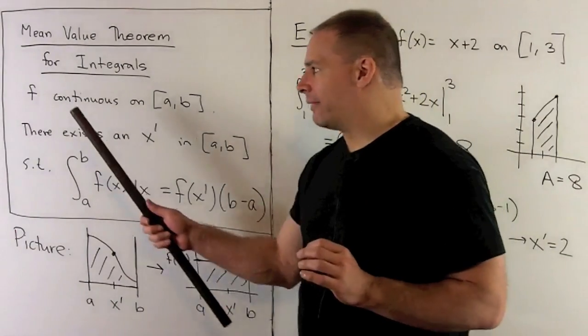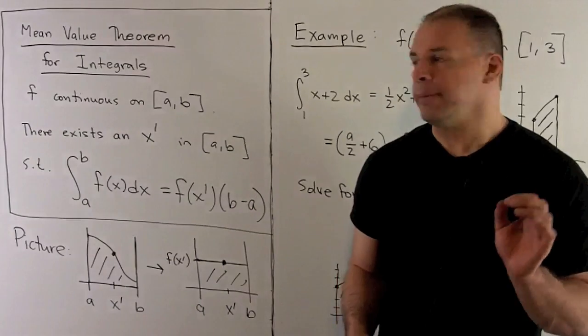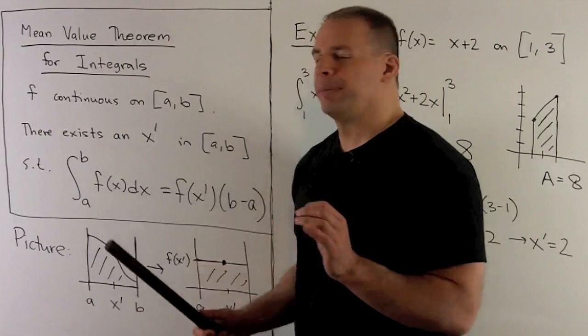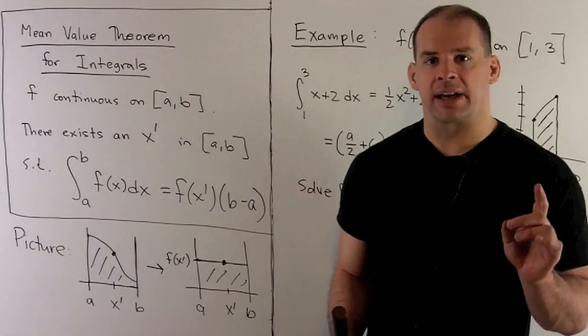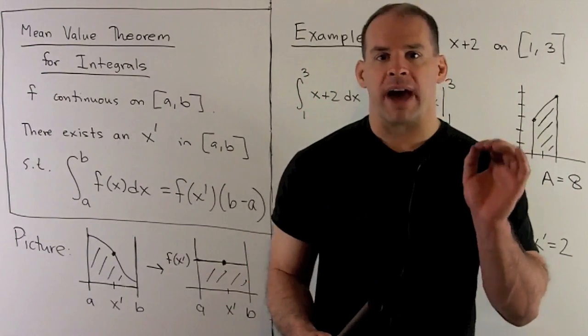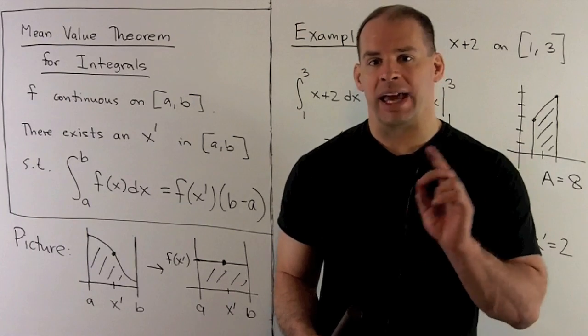Now, we'll have f continuous on a closed interval [a, b]. We're going to take the definite integral from a to b, f of x with respect to x. So this is just going to be the net area between the graph of f and the x-axis between a and b.